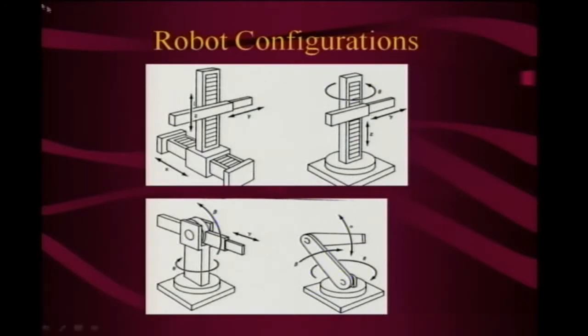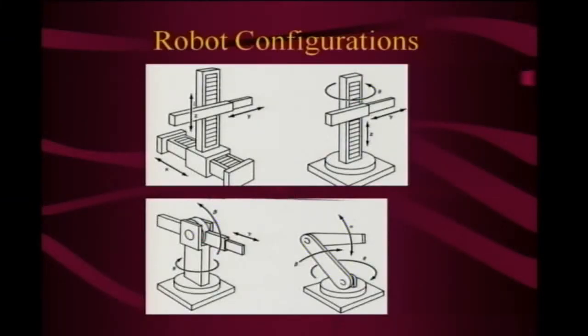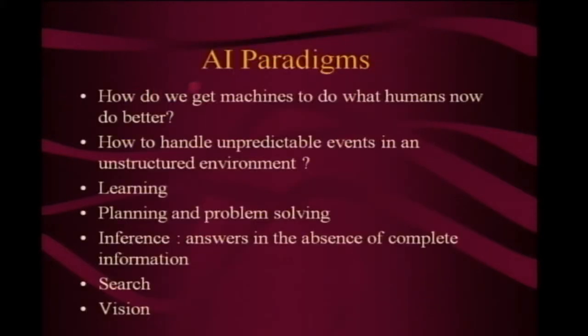Nobody makes robots like the Cartesian type except for use in the IC industry, where the big advantage is that everything is clean — you are not worried about lubricating guides. Sometimes it is nice to have that configuration if you can approach from the top, which you cannot easily do with a revolute one. Roughly by the 1970s, we had perfected the so-called industrial manipulator, and a bunch of companies — ASEA, Cincinnati Milacron, Japanese, German — all started making robots and putting them into plants for spray painting and things like this.